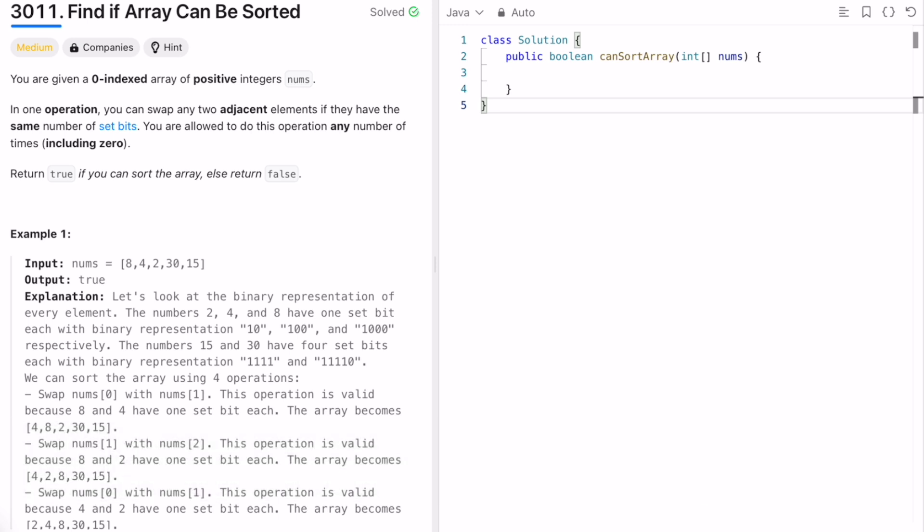In this question we are given an array which consists of positive integers called nums. In one operation we can swap any two adjacent elements if they have the same number of set bits. Set bits means the number of one bits inside that number and we are allowed to do this any number of times including zero.